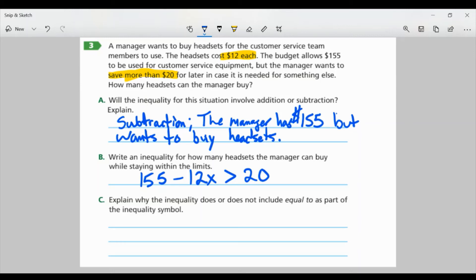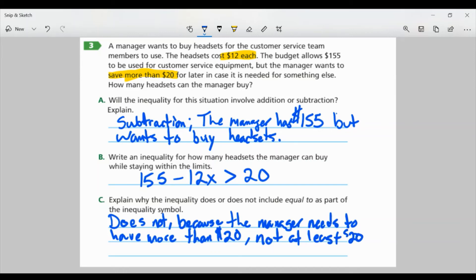Part C. Explain why the inequality does or does not include equal to as part of the inequality symbol. Well, it does not. And it's because the manager needs to have more than $20. Not at least $20. So, we want it more than $20, not equal to $20.